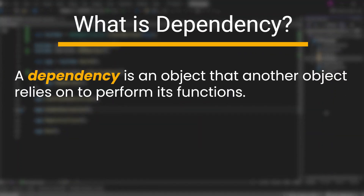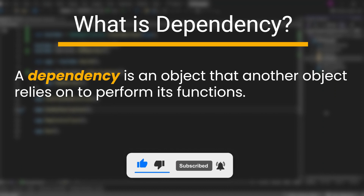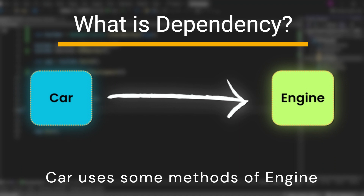Before diving into dependency injection, let's first understand what a dependency is. A dependency is an object that another object relies on to perform its functions. For example, a car class that requires an engine to function. In this case, the car class is dependent on an instance of the engine class. These required classes are called dependencies. When the car class uses methods of the engine class, it is said to have a dependency on engine.